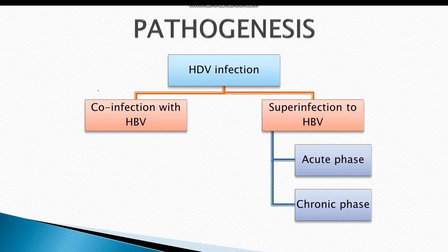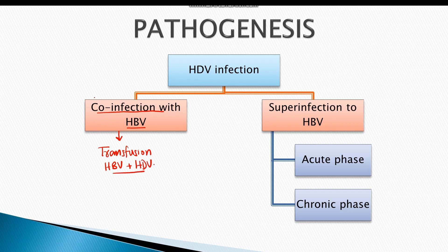Hepatitis D virus infection occurs in two ways. The first and less common way is co-infection with hepatitis B virus, which occurs due to transfusion of serum containing both viruses and occurs in almost 5 to 10% of cases. The more common way is super-infection to pre-existing hepatitis B virus infection, which occurs in almost 90% of cases.